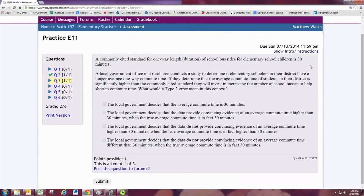When you look through the choices, you can go through them one by one. Notice that the first one says the local government decides the average commute time is 30 minutes. That's equivalent to supporting the null hypothesis, which never actually happens. We either reject it or fail to reject it.